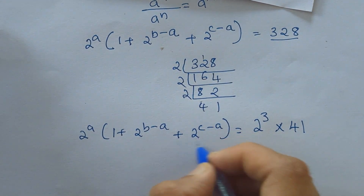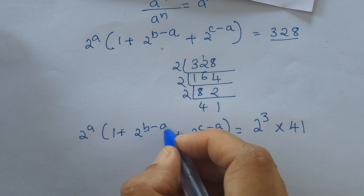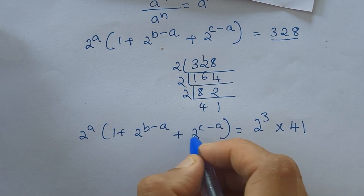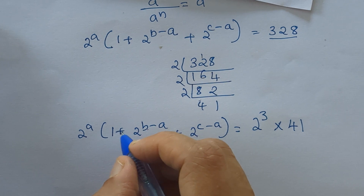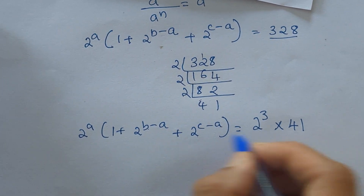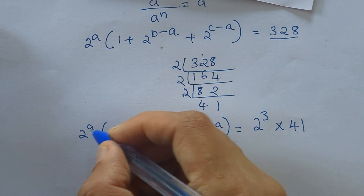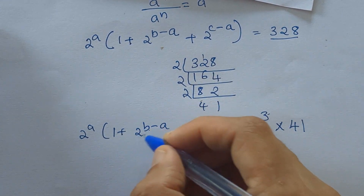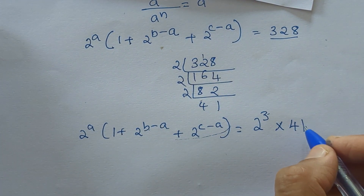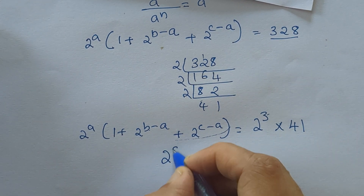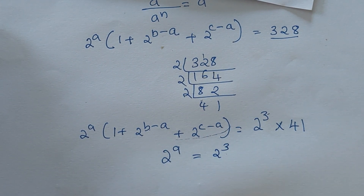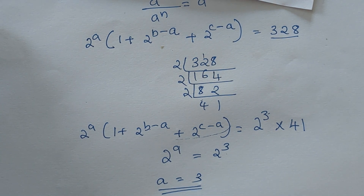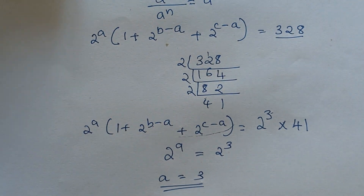Here 2 raised to C minus A is an even number and 2 raised to B minus A is also an even number. When we add two even numbers we get an even number, and plus 1 gives an odd number. So here, matching the format 2 raised to A with 2 raised to 3, and the odd part matches 41, we can say that 2 raised to A equals 2 raised to 3, therefore A equals 3.